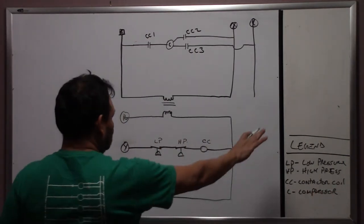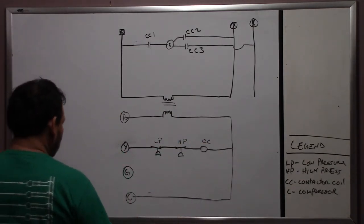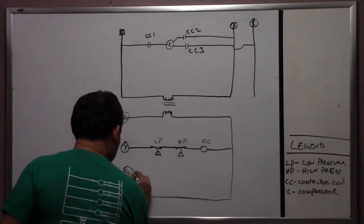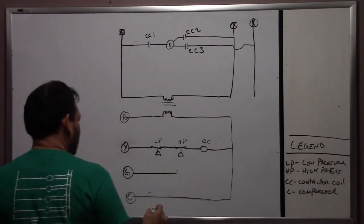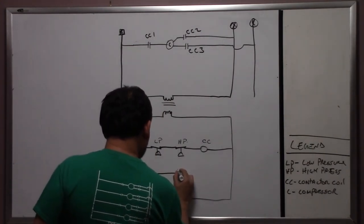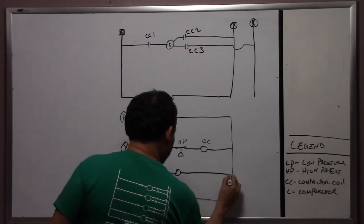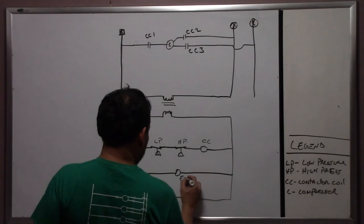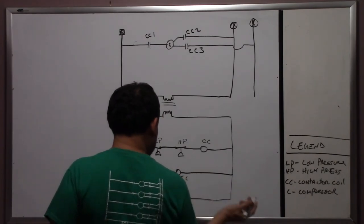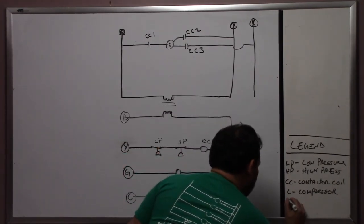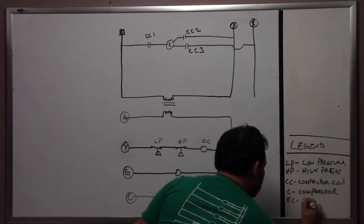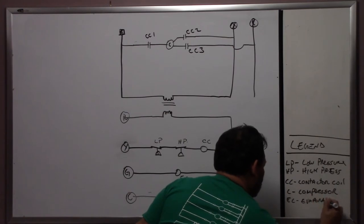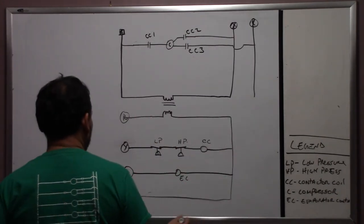So far we're good. Now we need a fan. Put an EC on that one. That will be your evaporator contactor coil.